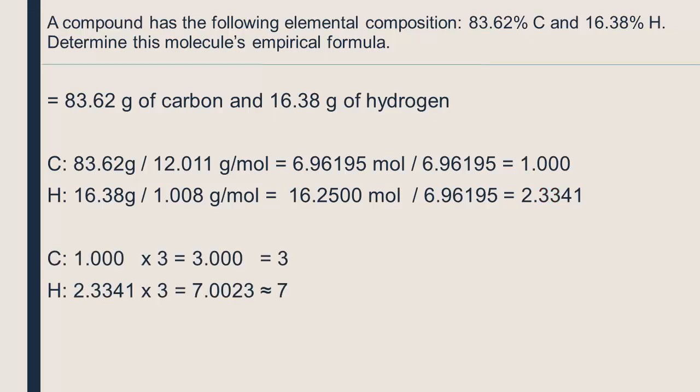In general, if a molecule ends in 0.3333 or 0.6666, we multiply by 3. Similarly, if a number ends in 0.5, we multiply by 2.